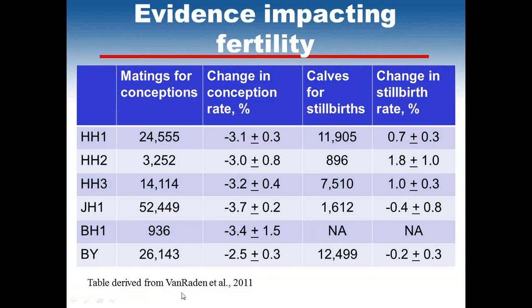This work was done by Paul Van Raden of the Animal Improvement Programs Laboratory. He and his colleagues estimated the frequencies, and also evaluated the evidence impacting fertility. Matings to evaluate conceptions were between carrier sires and carrier progeny of descendants of carrier maternal grandsires. The result determined is that the change in conception rate corresponds to about a 3% loss in conception rate from each of these Holstein haplotypes.